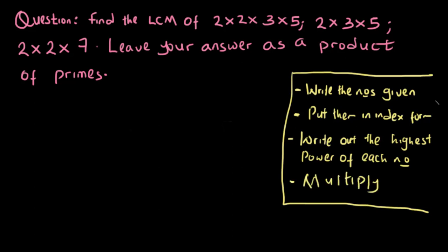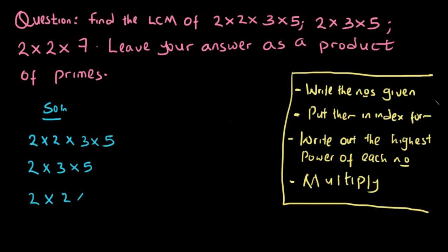So let's put these steps to work. We have this question: find the LCM of 2×2×3×5, 2×3×5, and 2×2×7. The first step is to write the numbers given, so I write: 2×2×3×5, then 2×3×5, then 2×2×7.